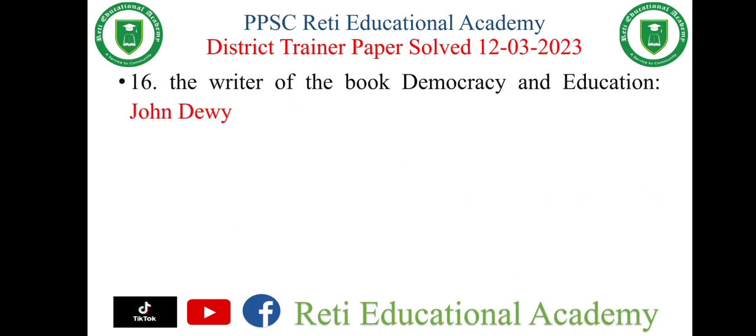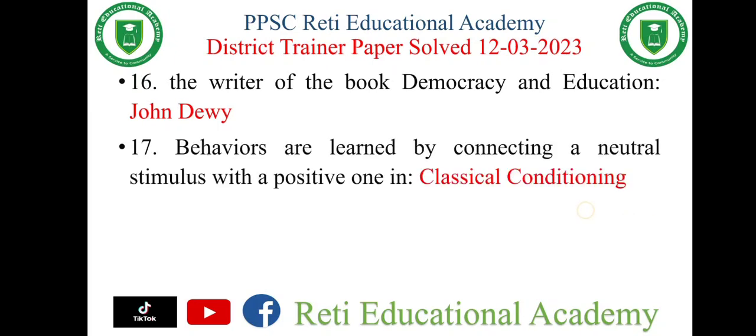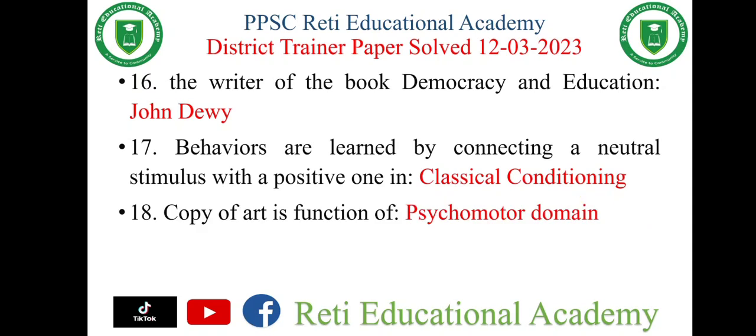Question number fourteen: cosmology is the study of the universe. Question number fifteen: humanistic theory was given by Abraham Maslow. Question number sixteen: the writer of the book 'Democracy and Education' was John Dewey. Question number seventeen: behaviors are learned by connecting a neutral stimulus with a positive one in classical conditioning.